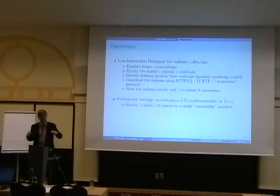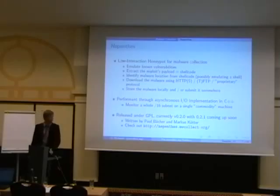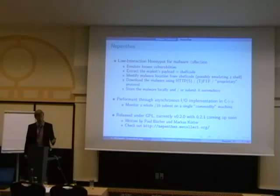This is implemented in C++ using AsyncIO. This is very performant, so you can monitor your whole /16 subnet or whatever your university or something owns with a single commodity hardware machine. This is of course unused IP space here you're going to put into your honeypot. It's released under GPL. It's been out there for two years now and version 0.2.1 is going to be released soon. There's some improvements and main parts of the software are written by Paul Becher and Markus Kata. You can just download it for free on the internet.